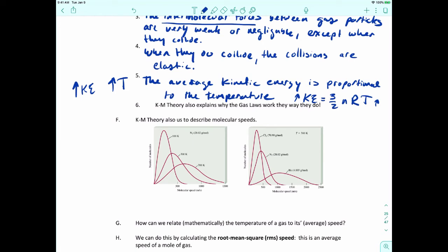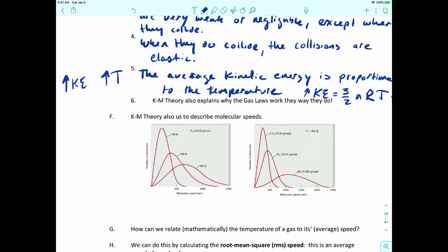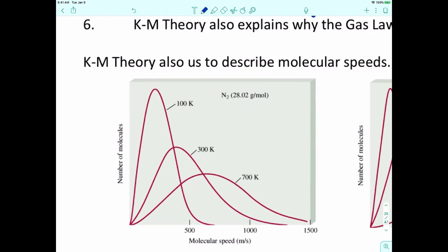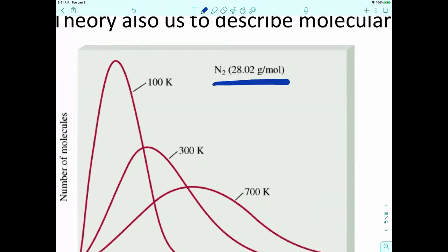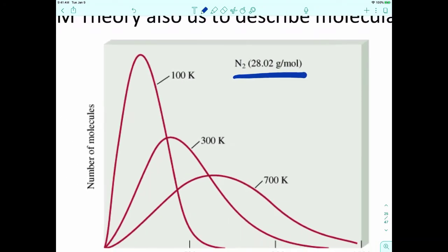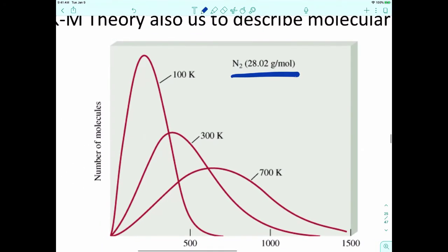Kinetic molecular theory can also explain how fast molecules are moving and talks about molecular speed. Let's look at two different scenarios. Here's one where we're studying nitrogen gas at three different temperatures: 100K, 300K, and 700K, shown as three different curves.